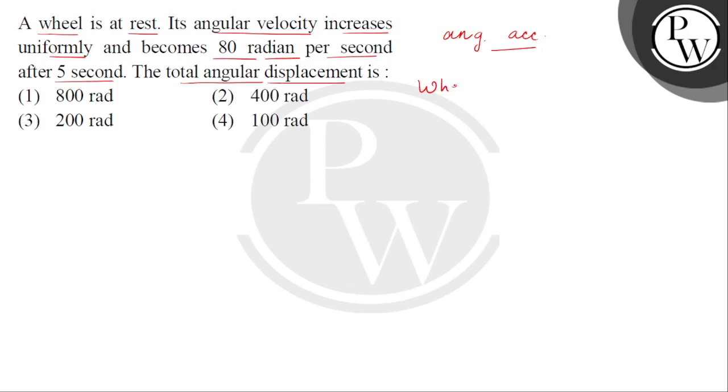This wheel is at rest, meaning the initial angular speed is 0. Then after 5 seconds, the angular speed becomes 80 radian per second. The time spent is 5 seconds, and we need to find the total angular displacement.